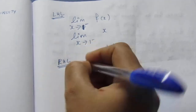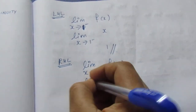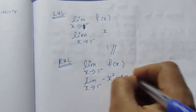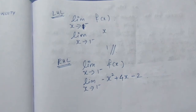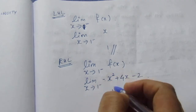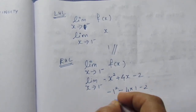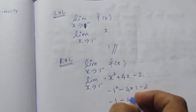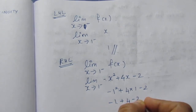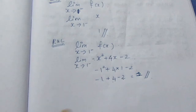Right-hand limit: limit x tends to 1 plus of f(x). On the right-hand side, f(x) equals minus x squared plus 4x minus 2. Substituting x equals 1: minus 1 squared plus 4 times 1 minus 2 equals minus 1 plus 4 minus 2, which gives us 1.